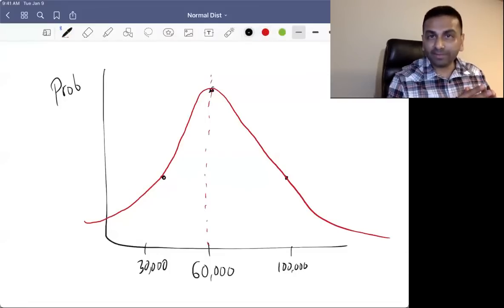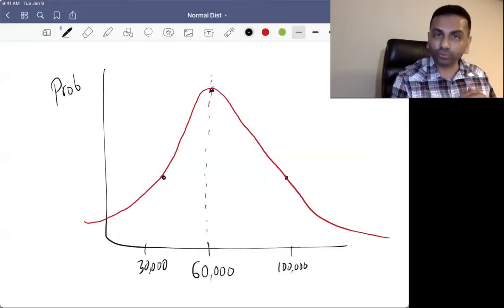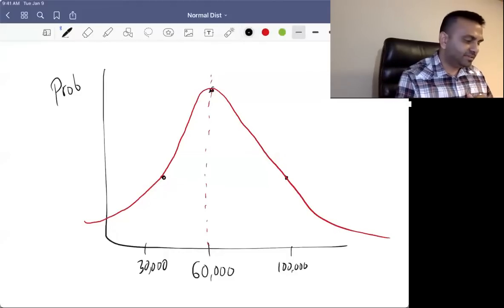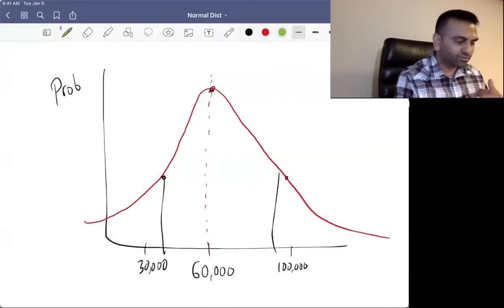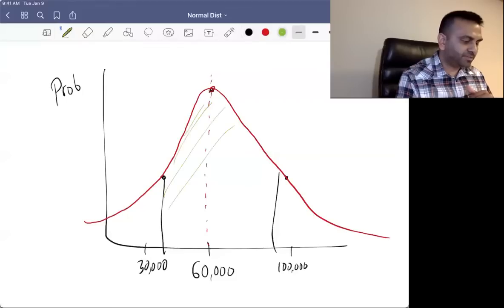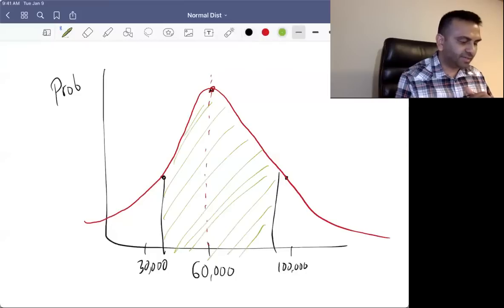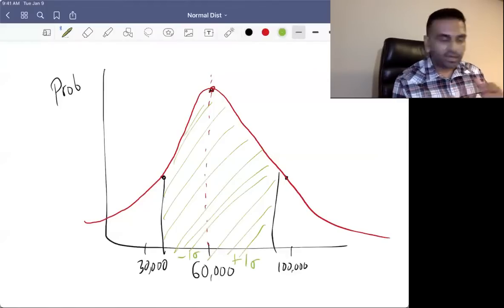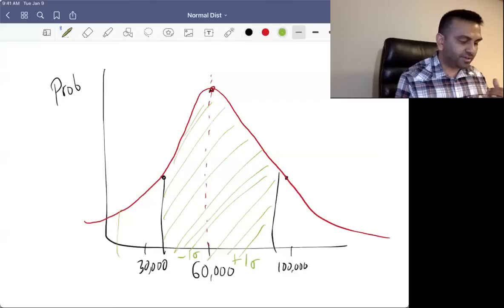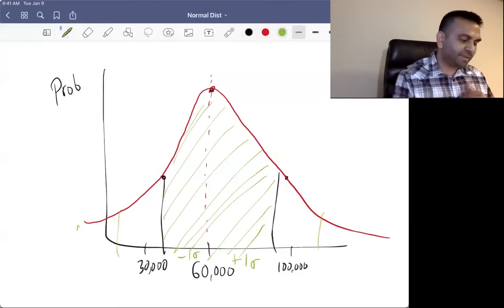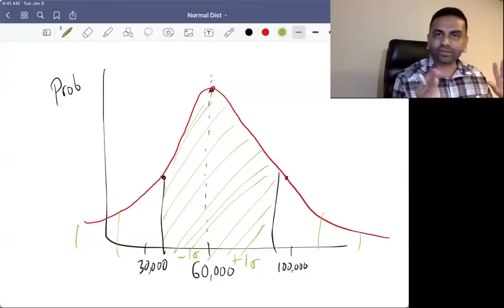Another cool property about the normal distribution is what's called the empirical rule. And what that's saying is that about 68% of observations of all data fall within one standard deviation of the mean, of that middle value. Another thing here is that it's unimodal, meaning there's one hump, and that's at the mean, and about 68% of the data fall within one standard deviation, meaning plus one standard deviation and minus one standard deviation of the mean. And 95% fall within two standard deviations of the mean. And almost everybody 99.7% fall within three standard deviations of the mean.